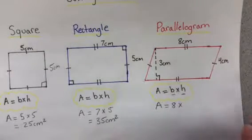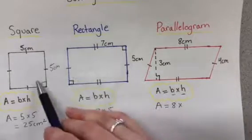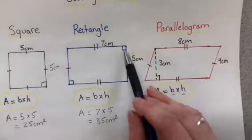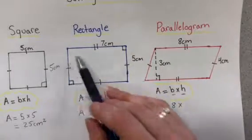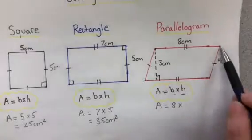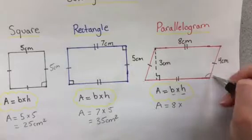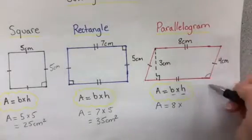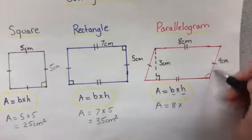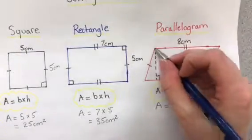Now our height—super important. Just like in the rectangle and square, height has to be 90 degrees from the base upward. Our height is not this side length here because this is not 90 degrees. This is not a 90-degree angle, so this cannot be our height. It's slanted. This here is 90 degrees from the base upward.